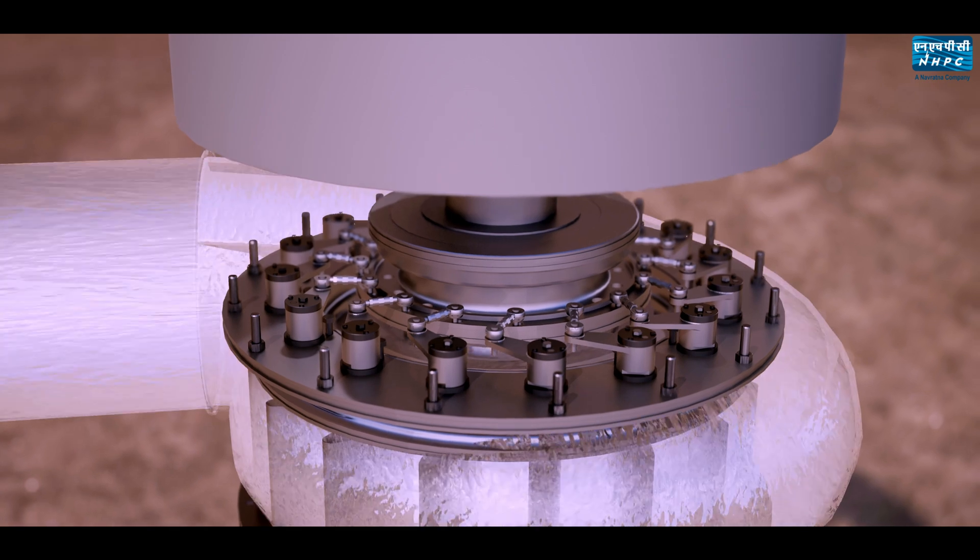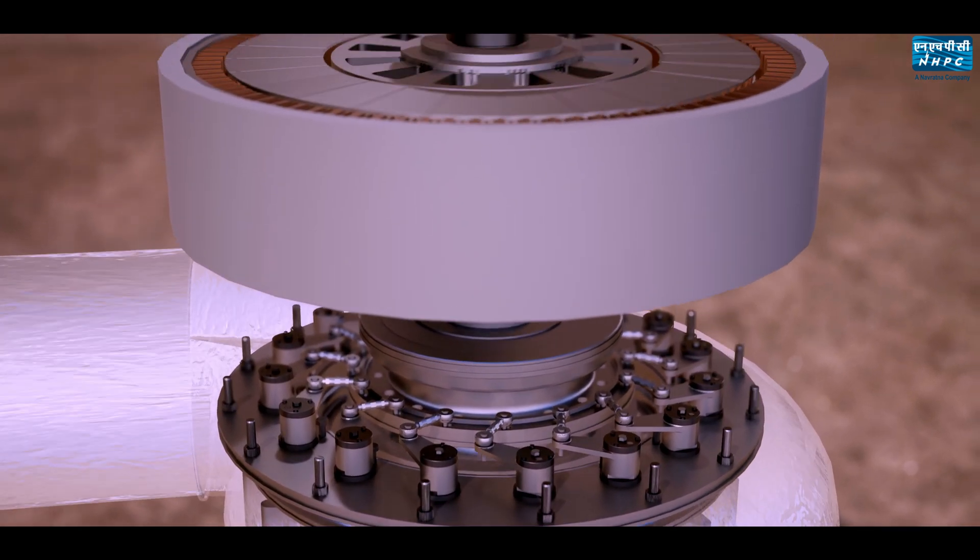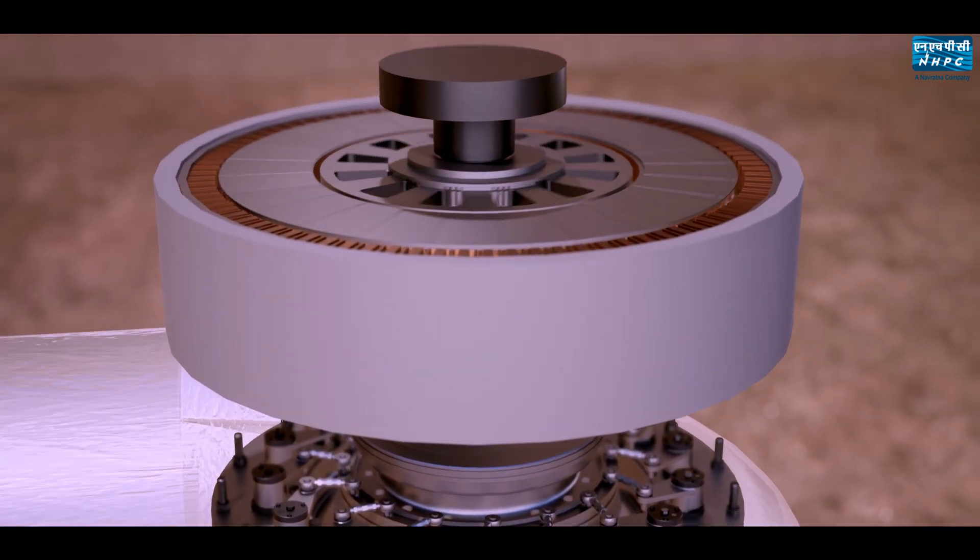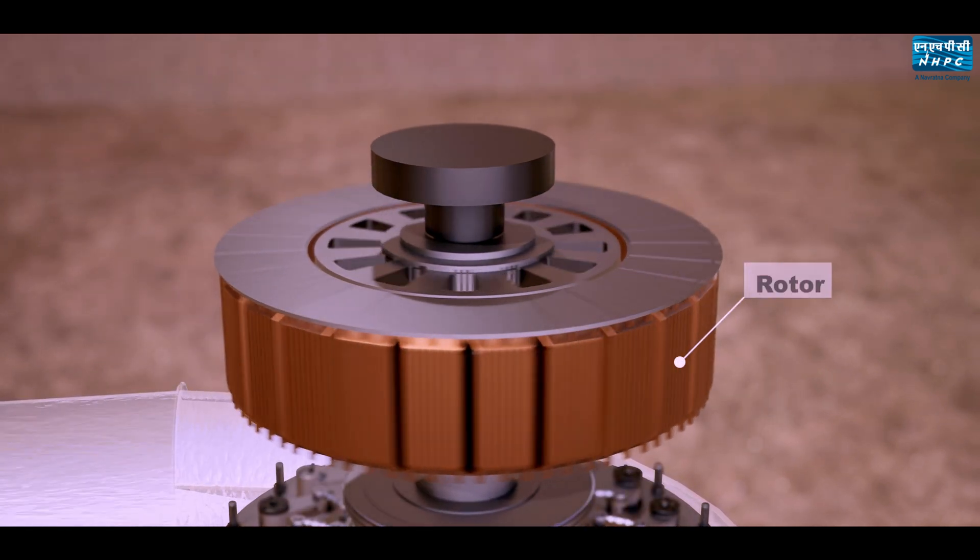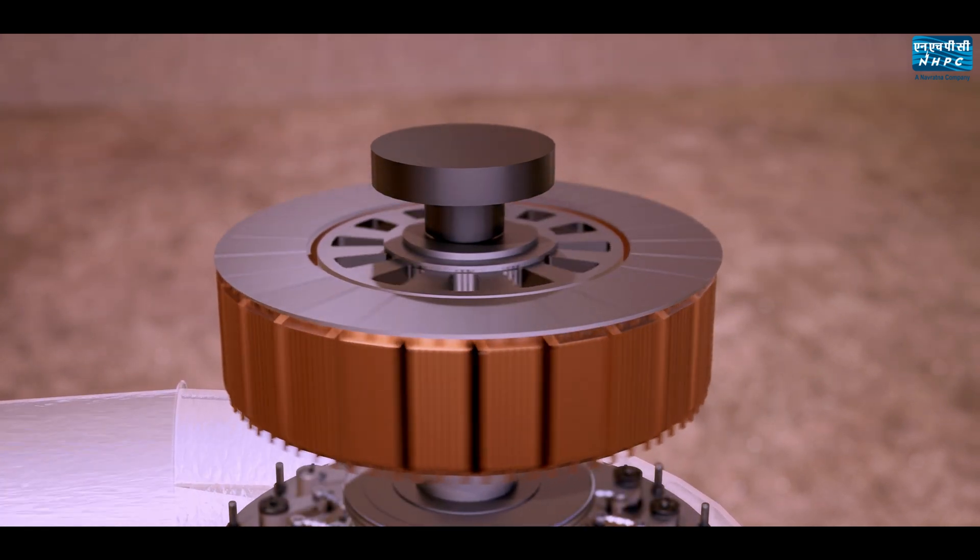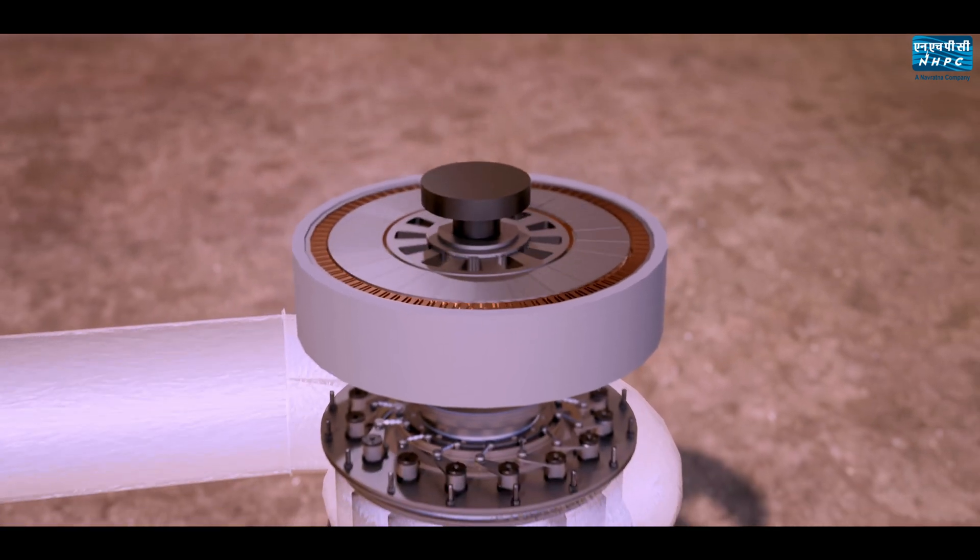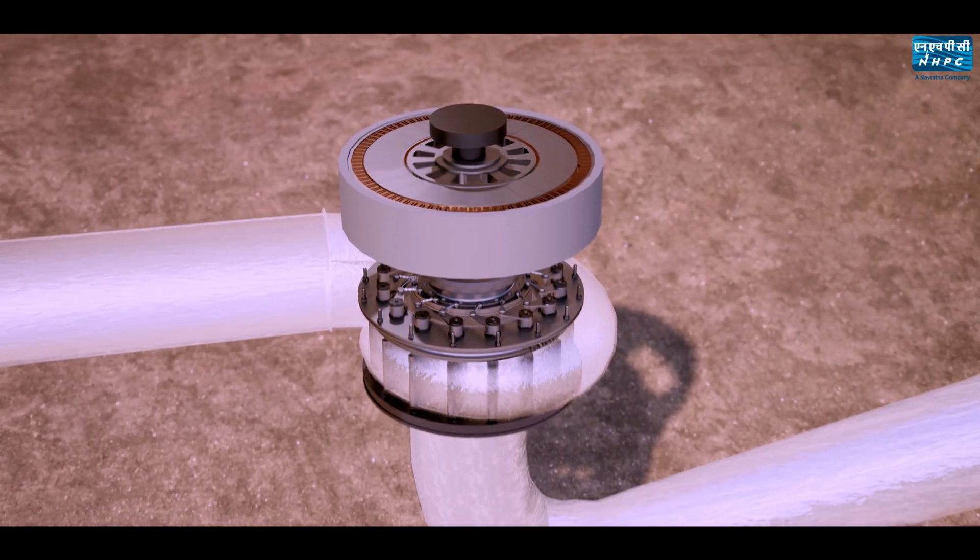The runner is coupled to the turbine shaft which in turn is coupled to generator lower shaft and to rotor. When the water flows through runner it starts rotating, thereby rotating turbine shaft, generator lower shaft, and the rotor. The rotor develops a rotating magnetic field which in turn develops voltage in generator stator windings.